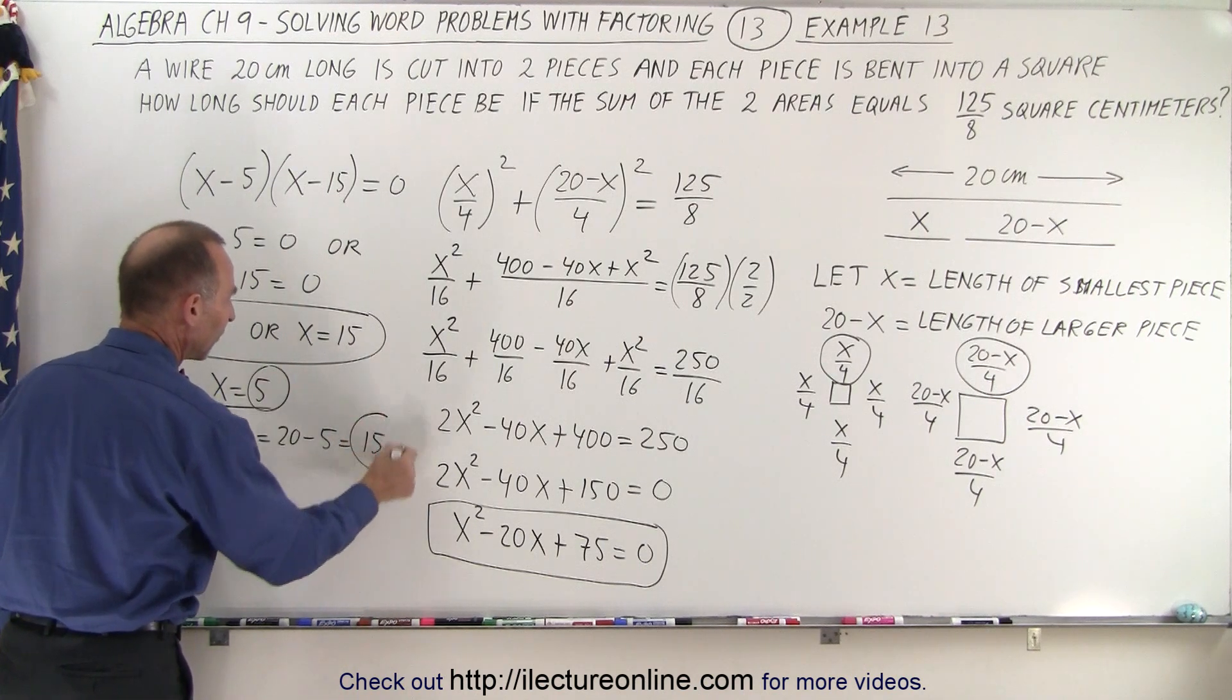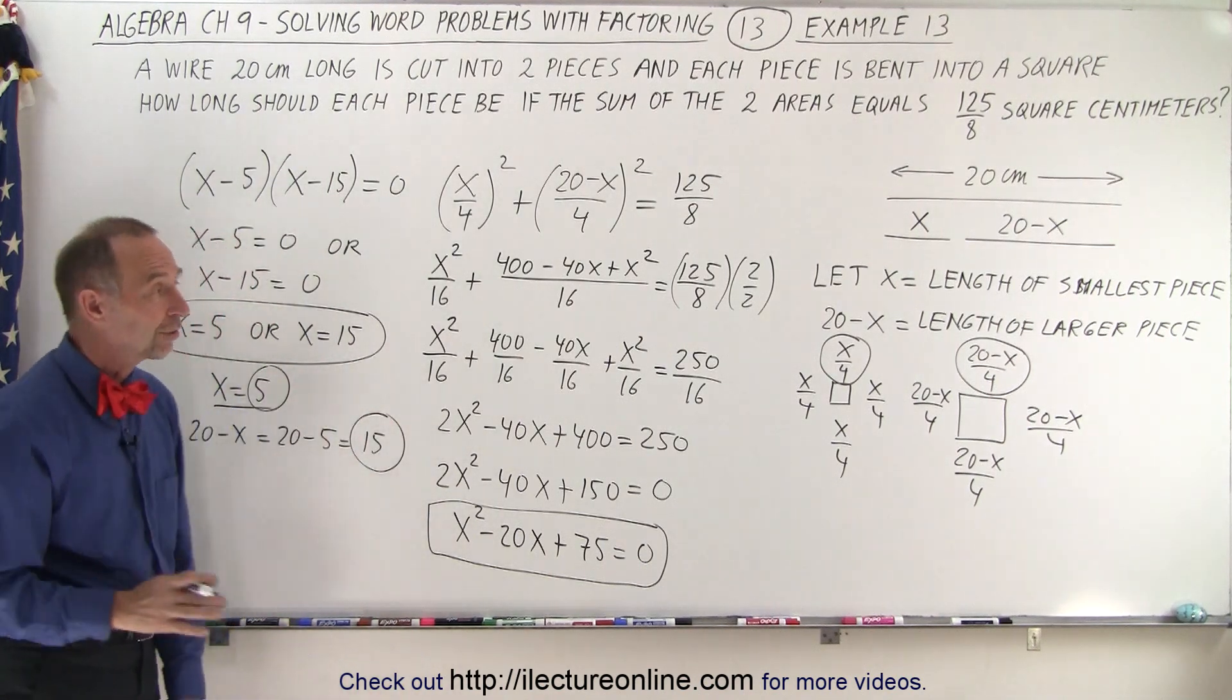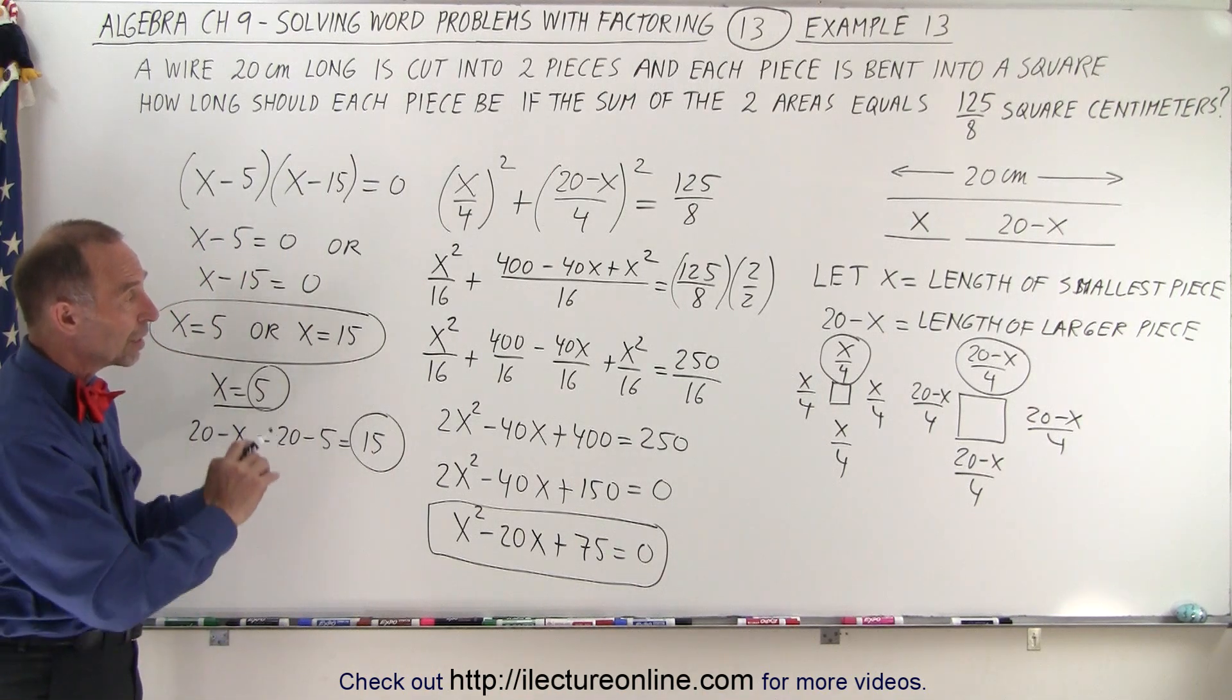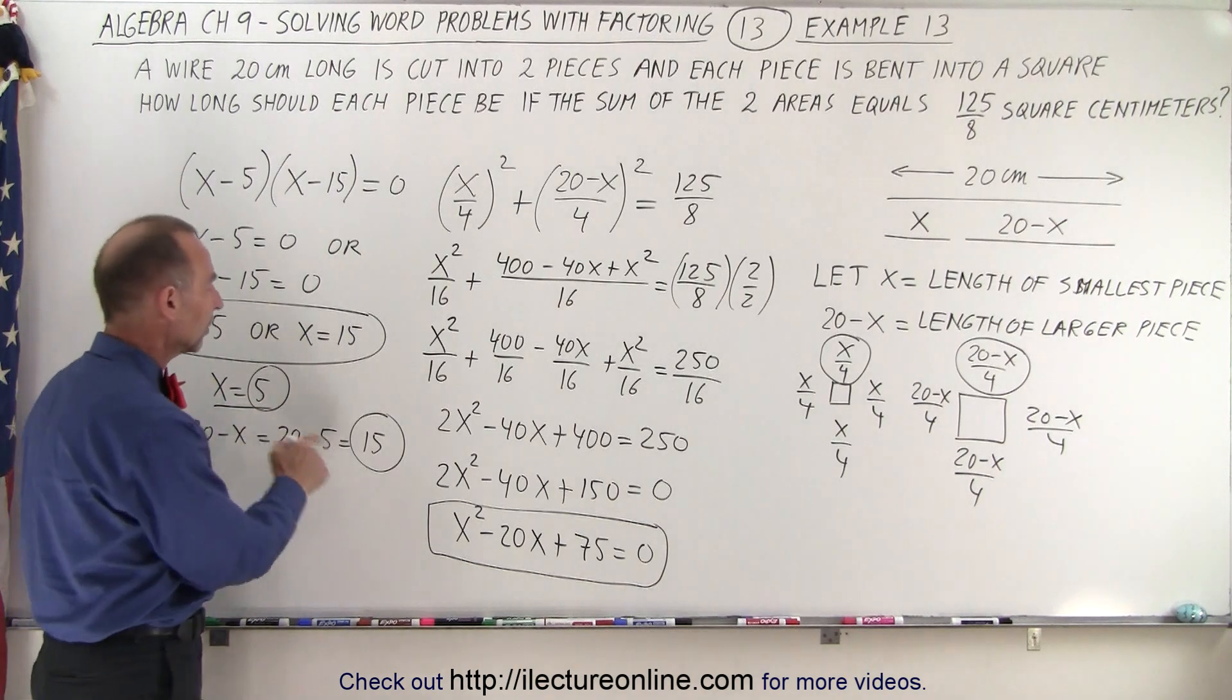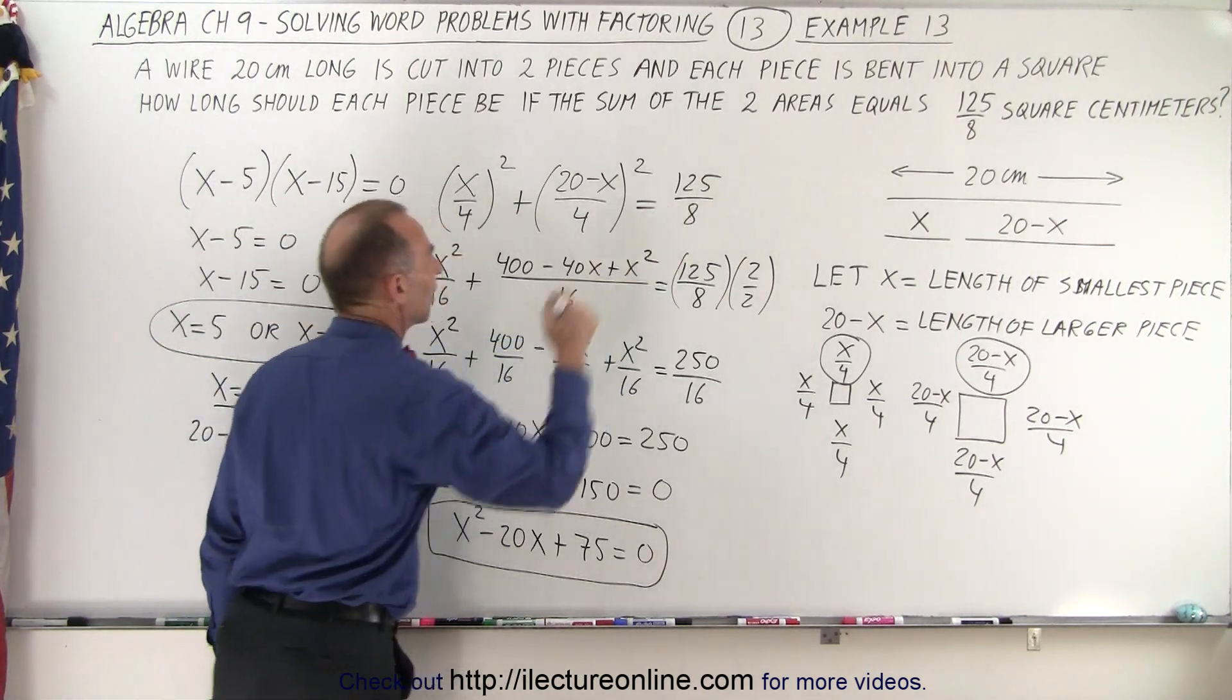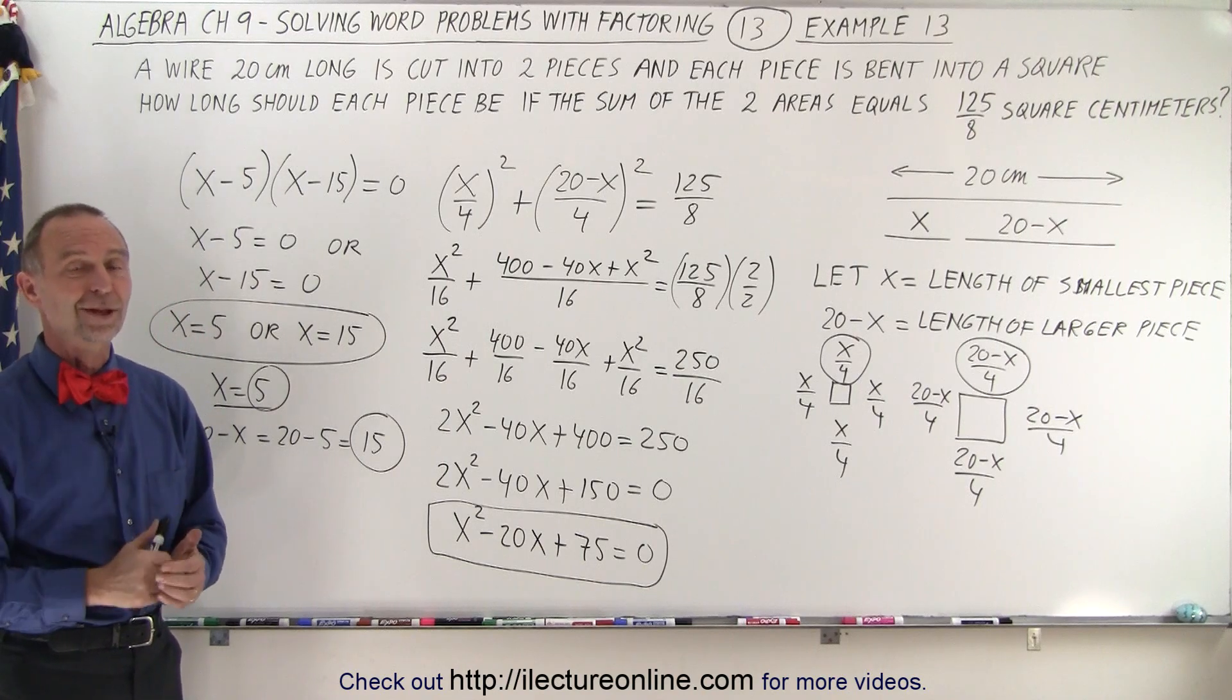And so you can see that 5 and 15 were the two sizes of the two pieces. When we bend those in the shape of a square, we add the two areas together, we'll get the total area of 125 divided by 8. And that is how it's done.